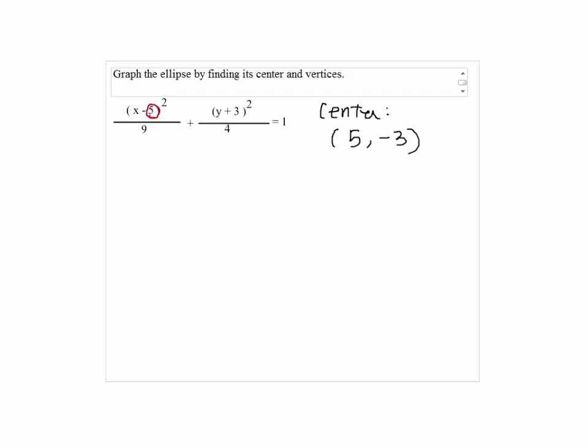Where 5 is from the x and negative 3 is from the opposite of 3. So 1, 2, 3, 4, 5 to the right and go down by 3. This will be our center.